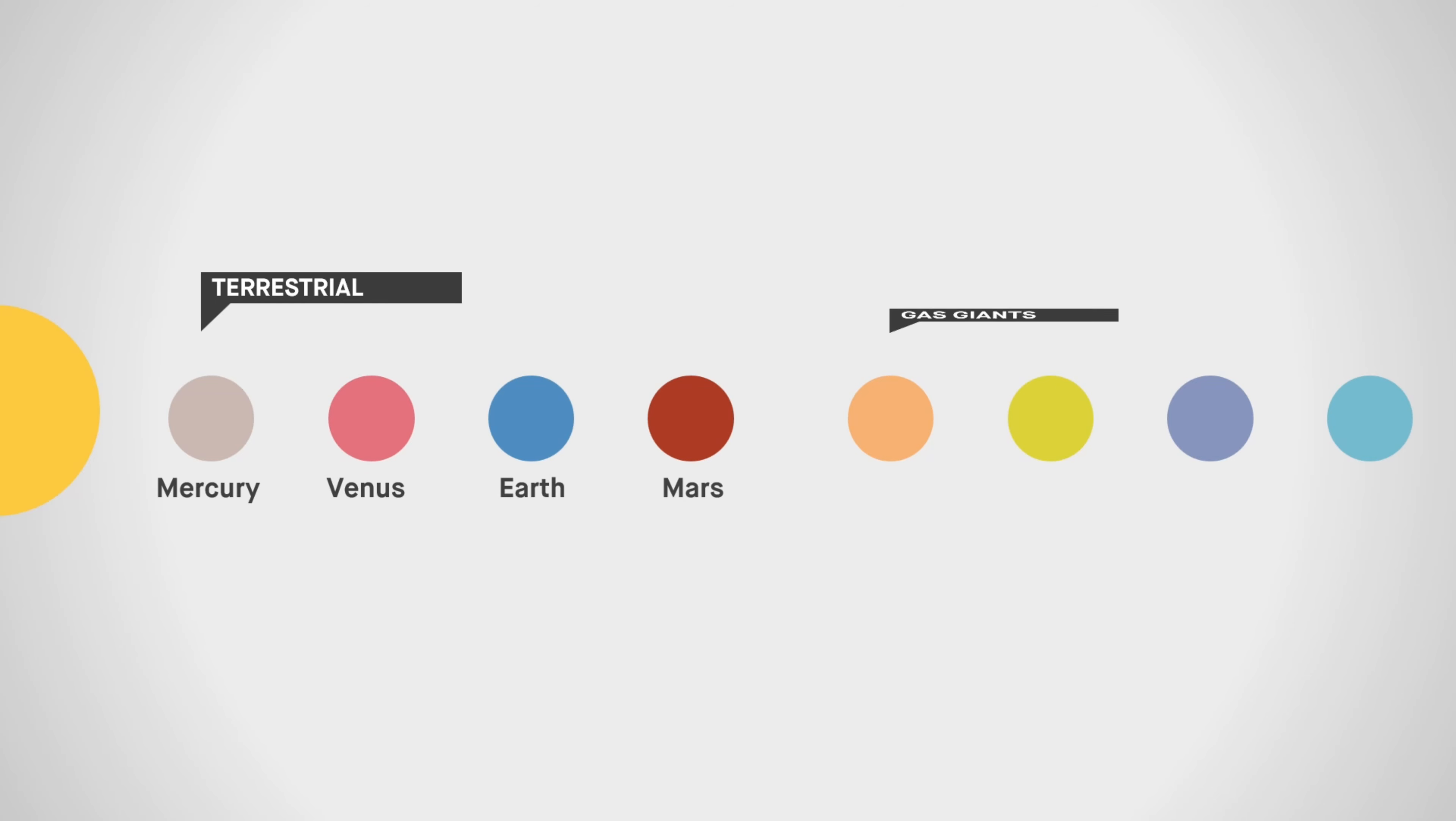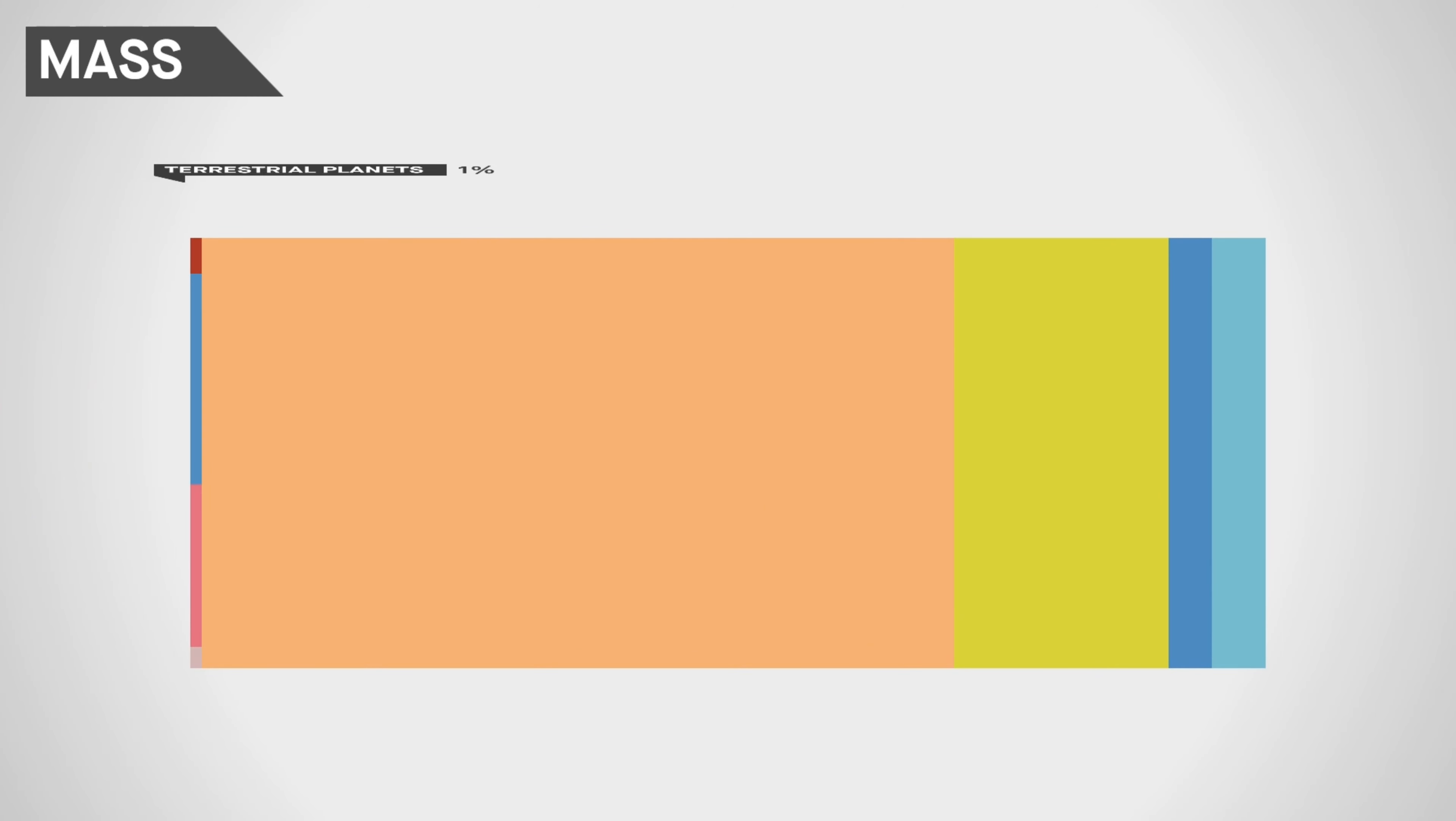Jupiter, the fifth planet from the sun, is a gas giant of unparalleled magnitude. Its sheer mass exceeds that of all the other planets combined, making it a true king in the cosmos.